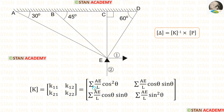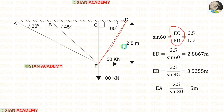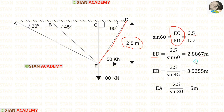In these formulas we have to find the length and theta values. First, let us find the length of ED. For that we apply the sine formula: sin 60 equals EC divided by ED. We already know the length of EC, which is 2.5 m. After calculations, ED equals 2.8867 meters. In the same way, using the sine formula, we can calculate EB and EA.